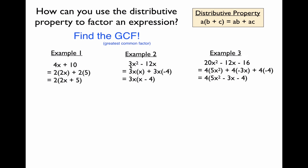In example 2, looking at the numeric terms 3 and 12 — ignoring the sign for a moment — they share a common factor of 3. The variables x squared and x both share a common factor of x, so the factor common to both terms is 3x. We can think of 3x squared as 3x times x, and negative 12x as 3x times negative 4. Both terms share a factor of 3x, so we rewrite that as 3x times the quantity x minus 4. We're essentially using the distributive property in reverse — factorization is just multiplication backwards.